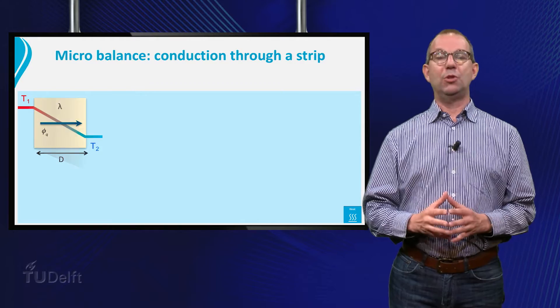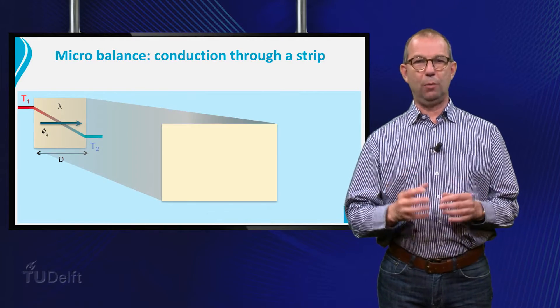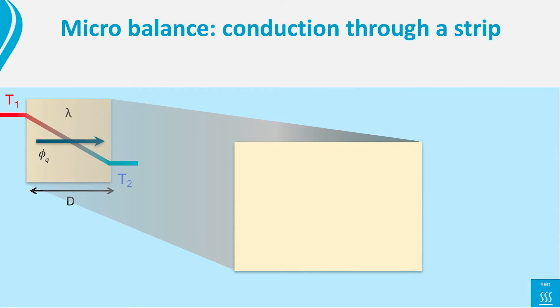So we start from scratch and redraw the situation. Now we define an x-axis, with x equals 0 the left side of the strip and x equals d the right side. We are going to set up a steady state heat balance, and we chose as control volume a thin strip located between x and x plus dx in the material.